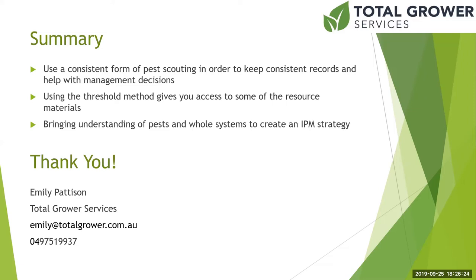You want to be able to compare beneficials at different times. For example, I always find I get the greatest percentage of assassin bugs just after flowering, which provides a buffer for things like fruit spotting bugs moving in, but it also means they're probably feeding on pollinators. It gives you information on how many are out there and the ability to compare across blocks and times.